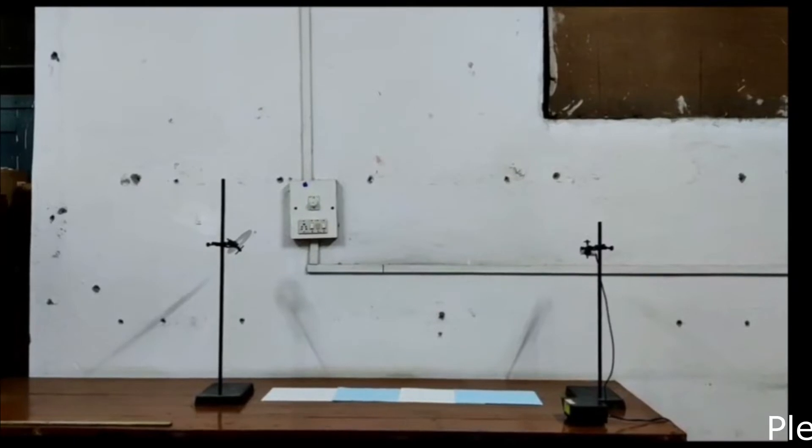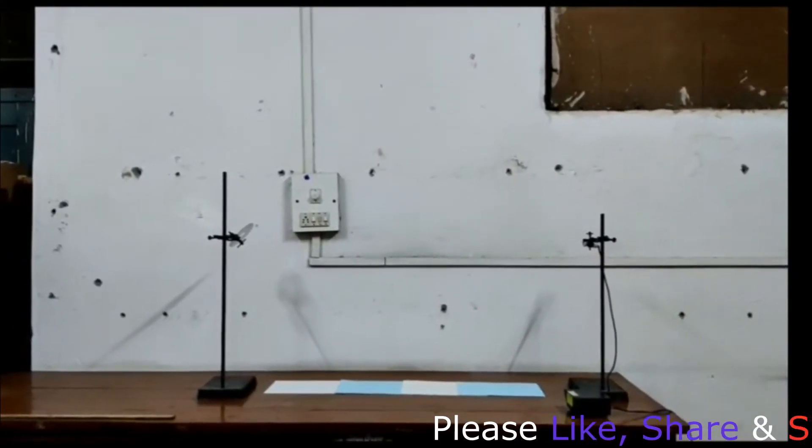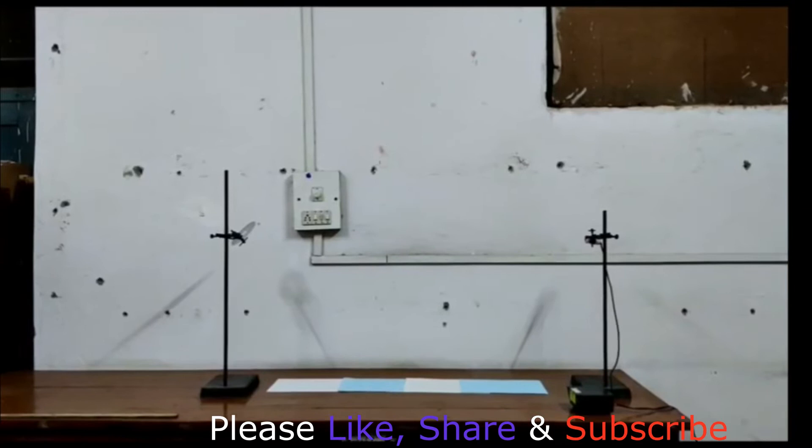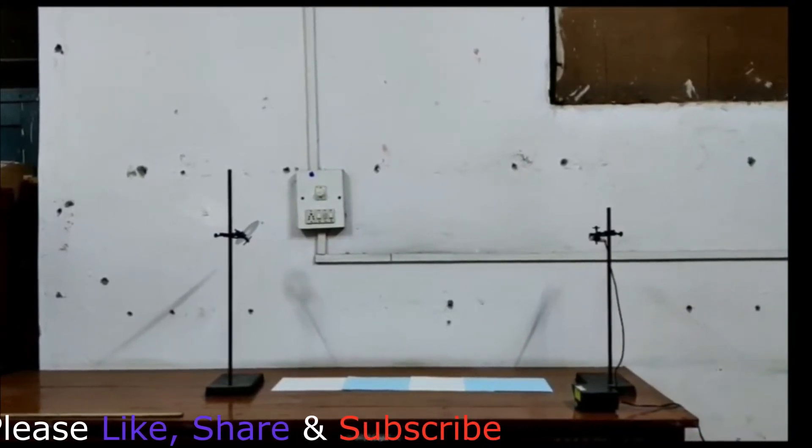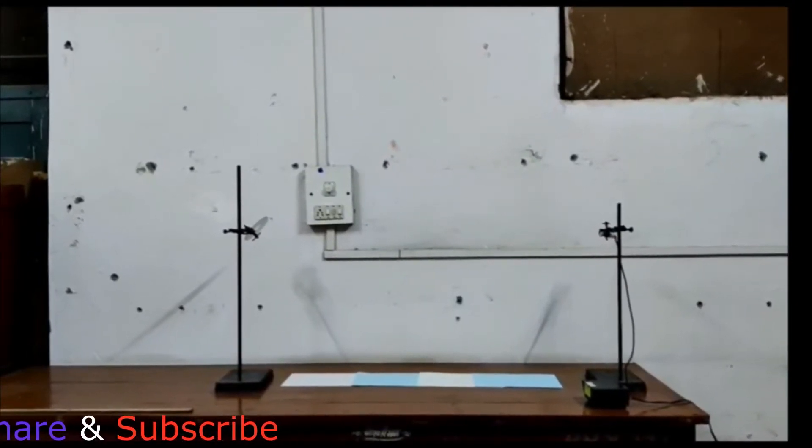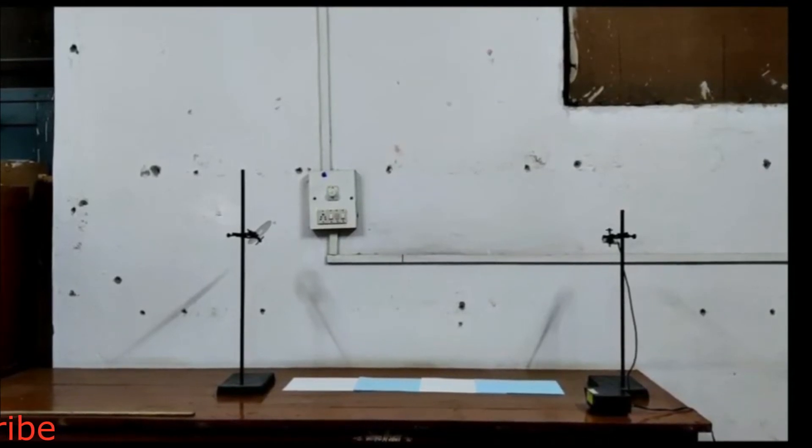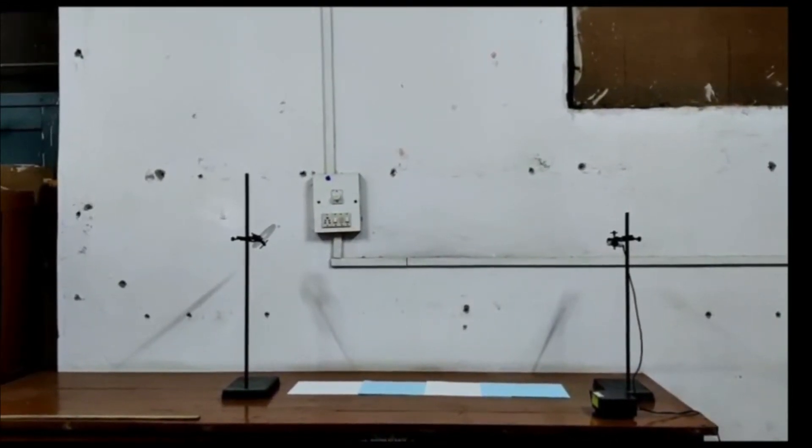Now we have to set up the apparatus: a CD stand, a laser stand with sufficient distance between them, and put a sheet of paper just below the CD stand to mark the diffraction spots.